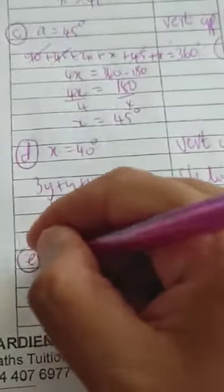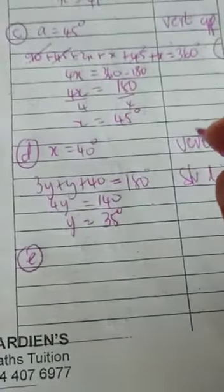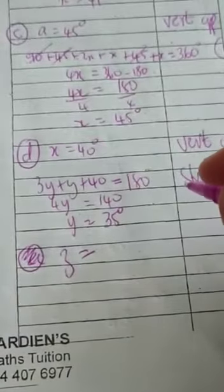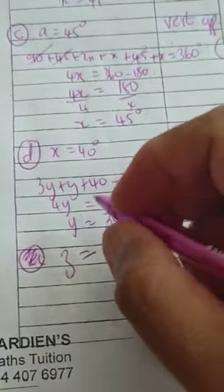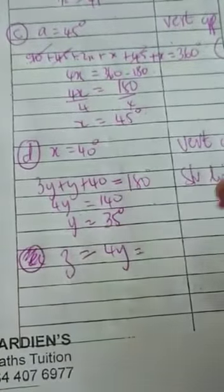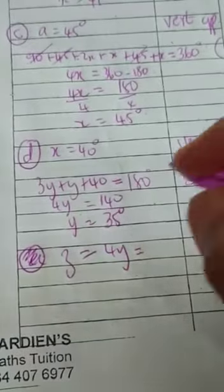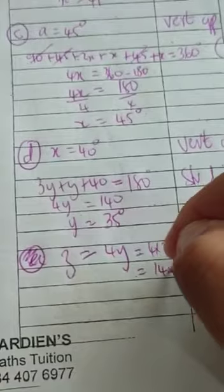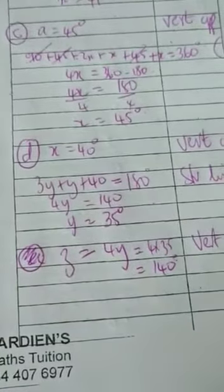Let's look at E. Oh, yes, and z. Let's sort this z out for you. z is going to be equal to 4y. So it's vertically opposite. So it's going to be 4 times 35. So it's 70 is 140 degrees.